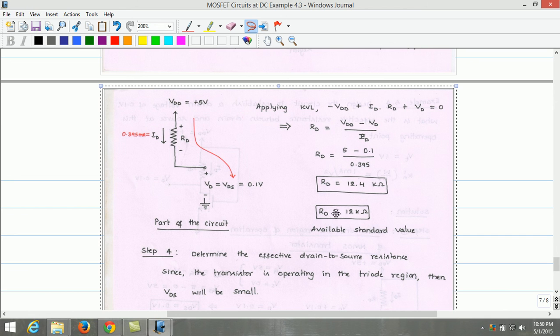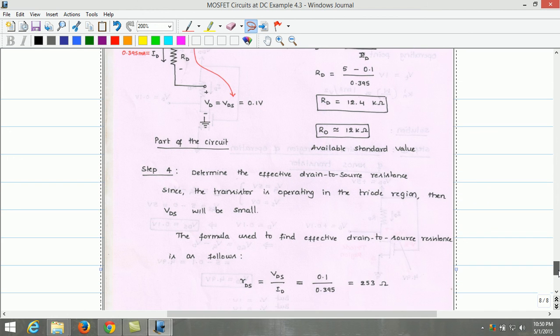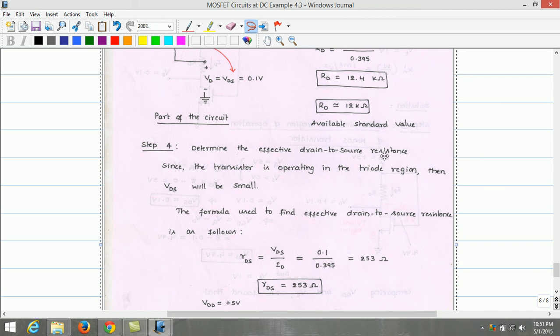This is approximated to 12 kilo ohm, which is the standard value. Now, to determine the effective drain-to-source resistance of the transistor, since the transistor operates in triode region, so in triode region, the drain-to-source voltage is very small.